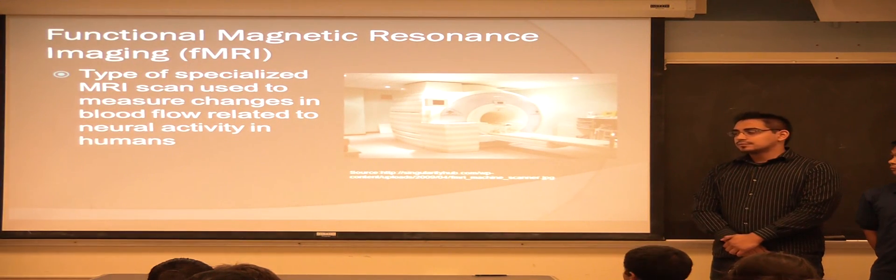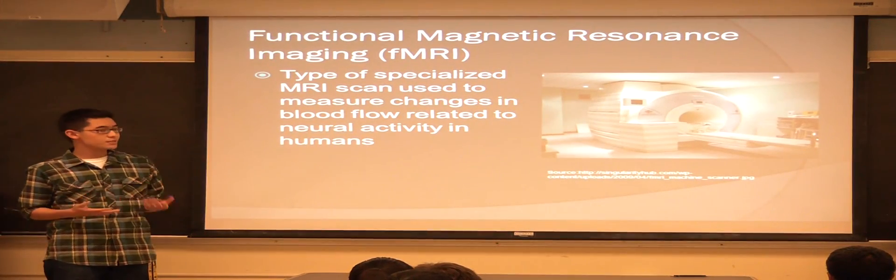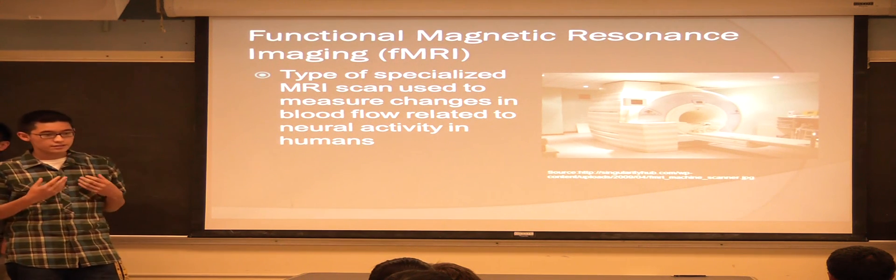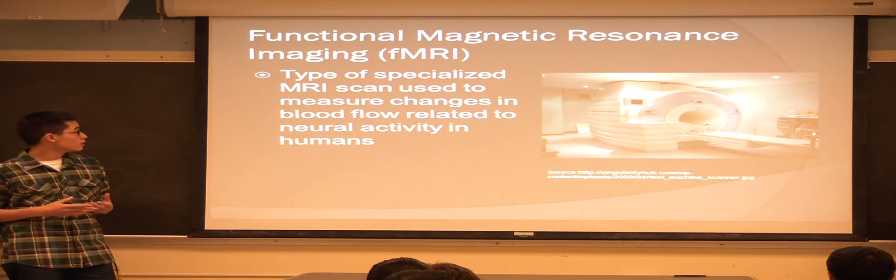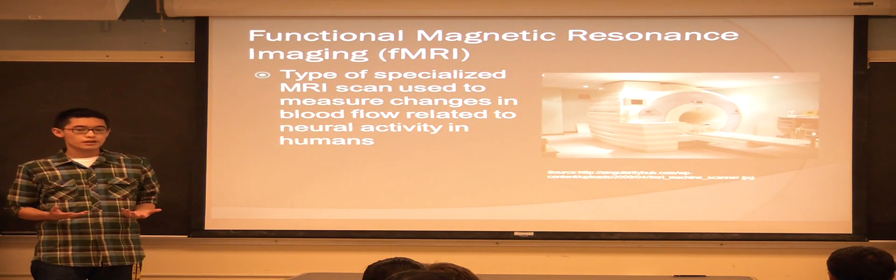So one of the devices that we're going to take a look at is the functional magnetic resonance imaging, or fMRI. What the fMRI is, is that it's a type of special MRI scan used to measure changes in the blood flow related to neuroactivity.